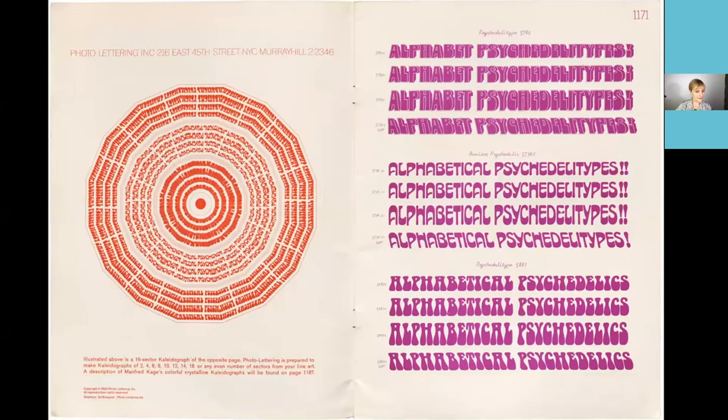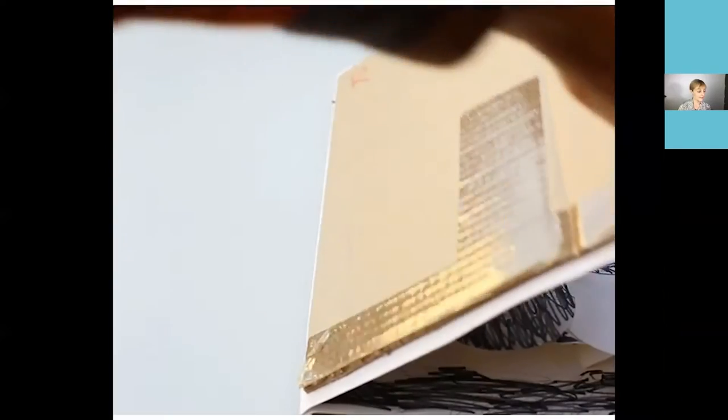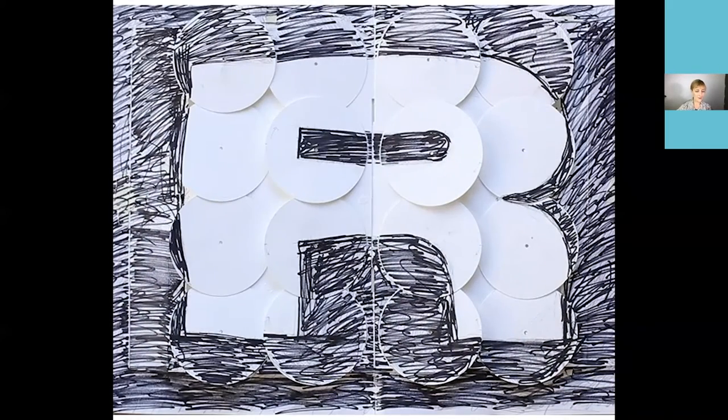This is a book that I saw at the Letterform Archive. It's called Psychedelotypes. This is called a Kaleidograph. It's a type of photolettering. There's many different devices for photolettering. But all of these typefaces are designed by Ed Benguiat.